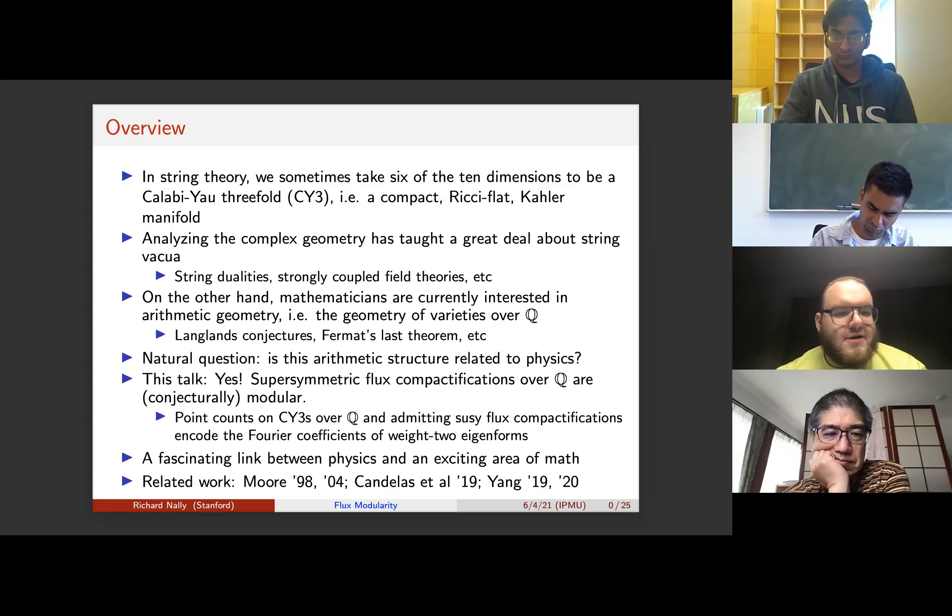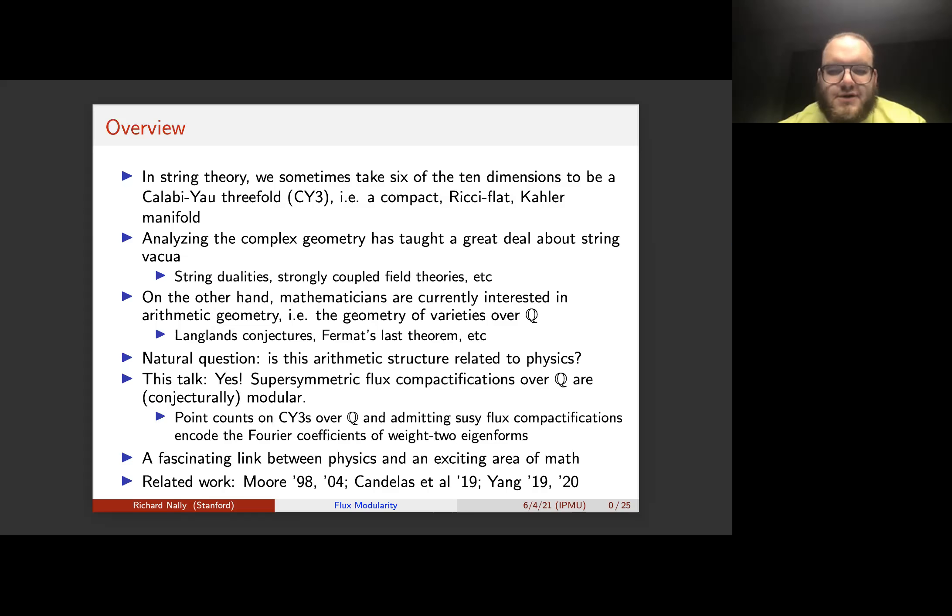But on the other hand, there's another point of view in math, which is currently pretty trendy, which is arithmetic geometry, where we view some of the same objects as being defined not over the complex numbers, but instead over the rational numbers. And this is the setting for some major buzzwords in recent math, like the Langlands conjectures, Fermat's last theorem, and other things of that nature.